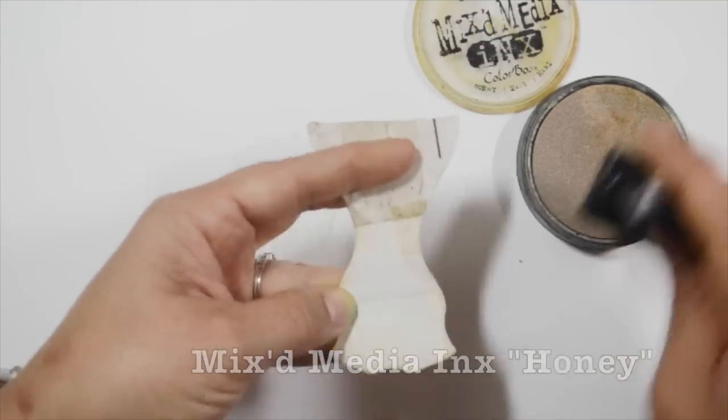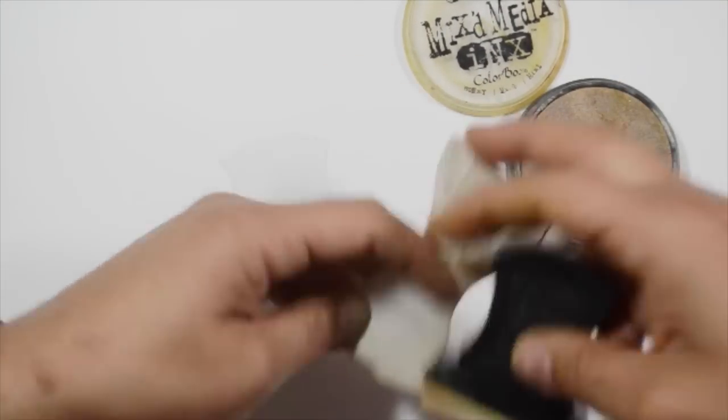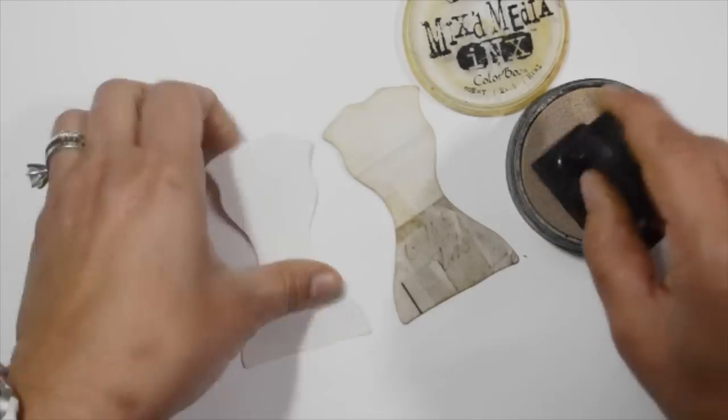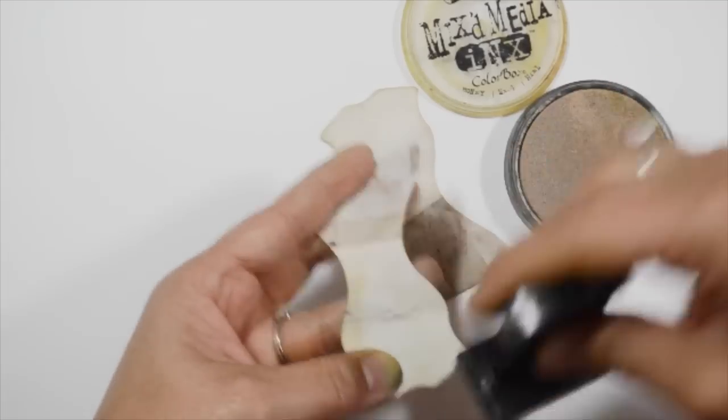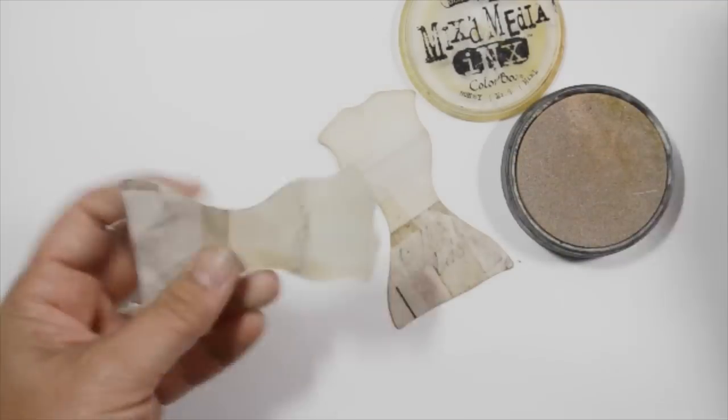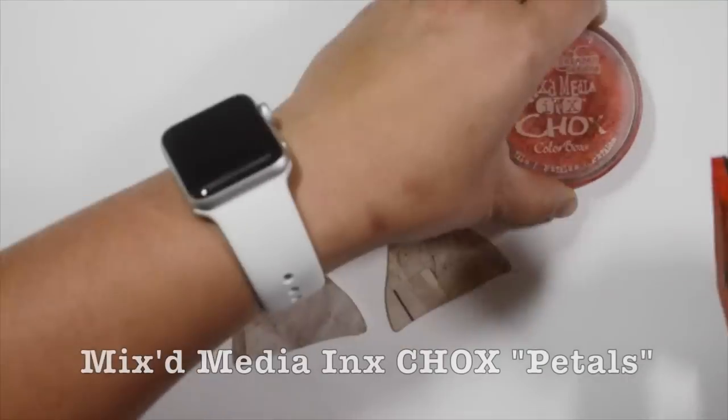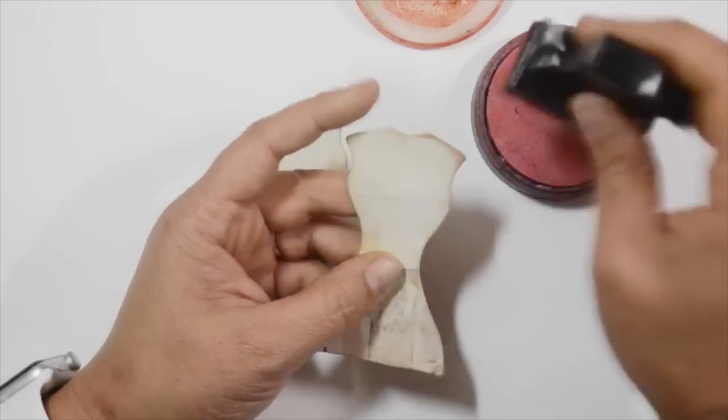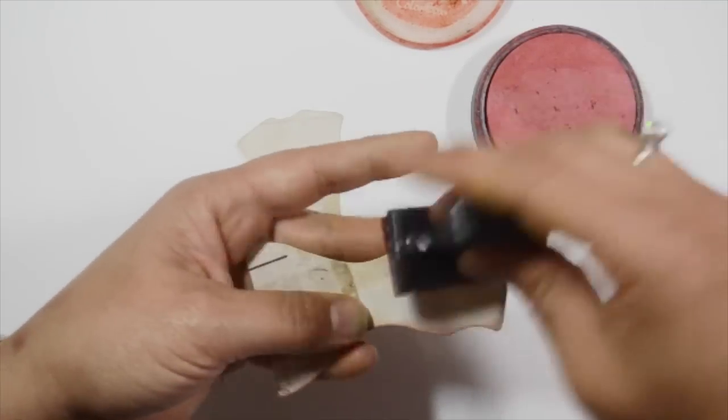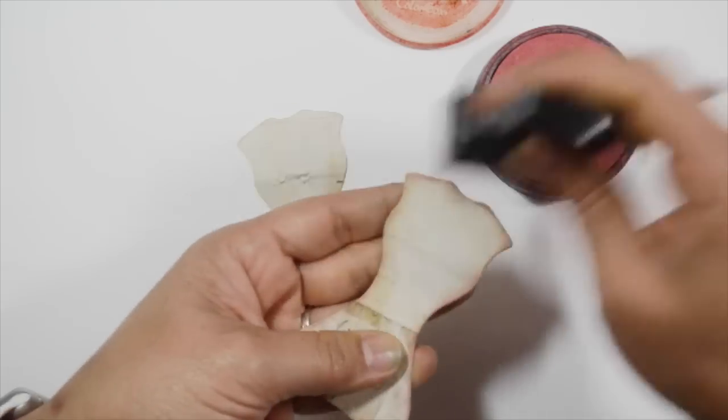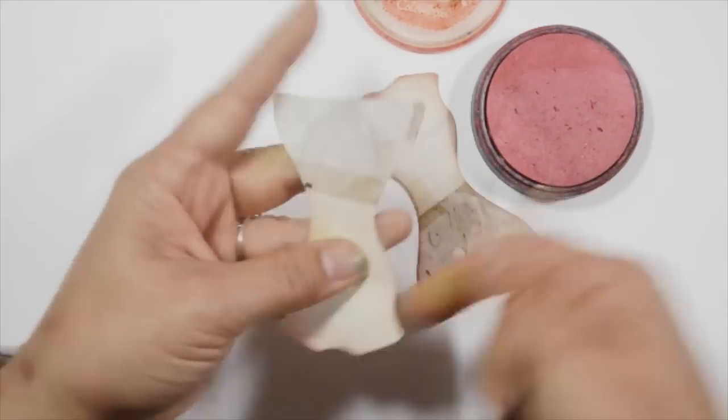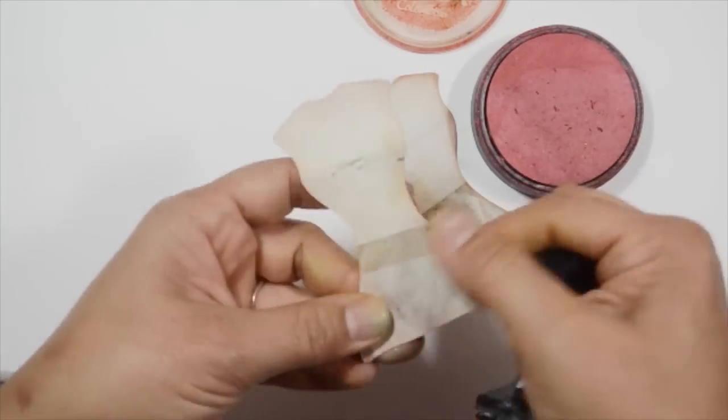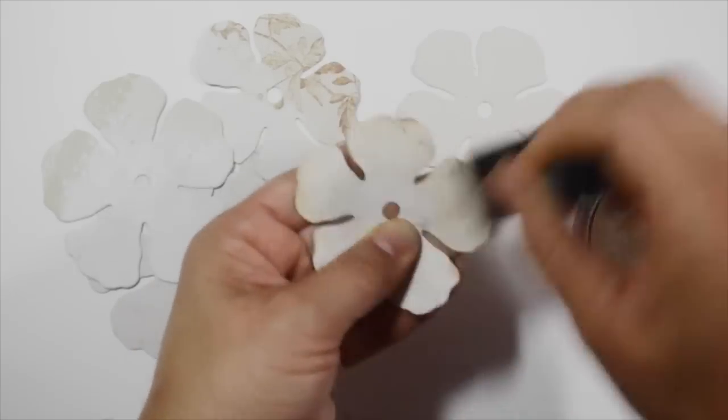Now I am inking the edge of the art doll bodies with mixed media inks, and this is the honey color. This is the one that is pigment-based, so it stays wet longer and blends really well. It's kind of like a paint—it almost feels like a paint, it's really thick. Then these are the mixed media inks chalks in petals, and these are great for stamping. When you add those over the inks, then they blend really nicely.